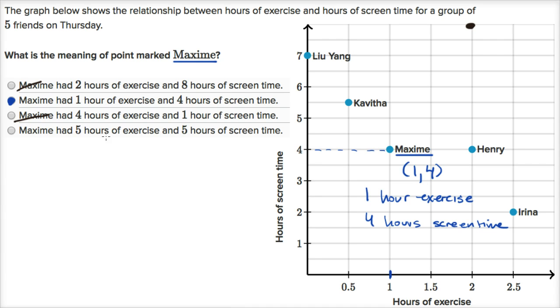Maxime had five hours of exercise. Once again, that's not even on the screen here. So we can rule all of them out. This third choice, they're actually trying to confuse you, because they're swapping the hours of exercise and screen time. Maxime has one hour of exercise, four hours of screen time. Not four hours of exercise and one hour of screen time.